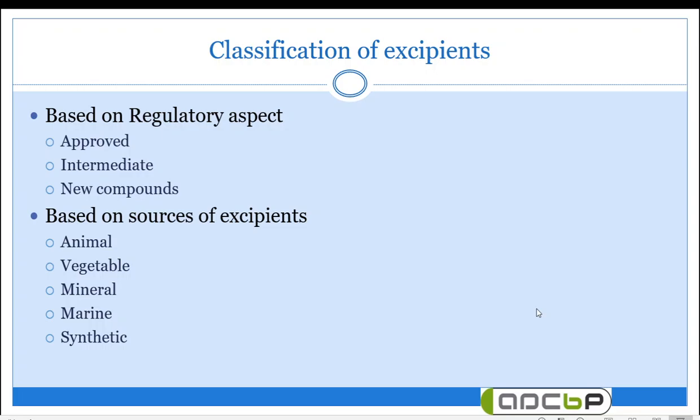In the first part we studied the general introduction and role of excipients. Now we are going to deal with classification of excipients. We can classify excipients by several methods — depending upon the regulatory aspect, depending upon their sources, depending upon their chemical nature, or depending upon their application. The first and easiest method is based on the regulatory aspect.